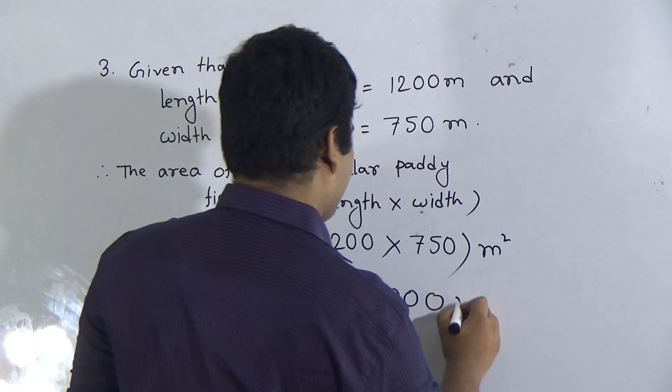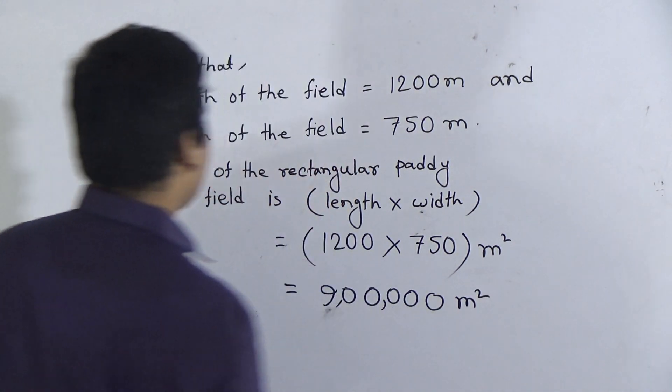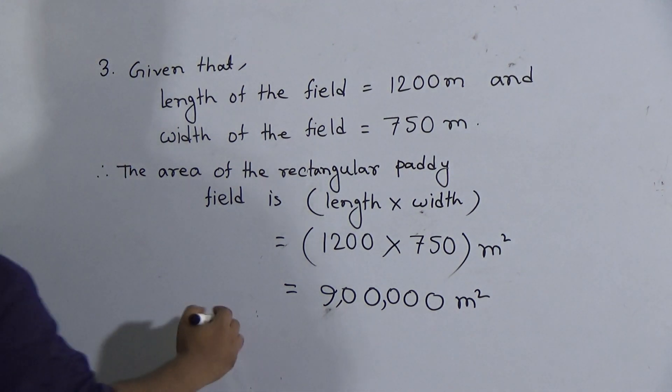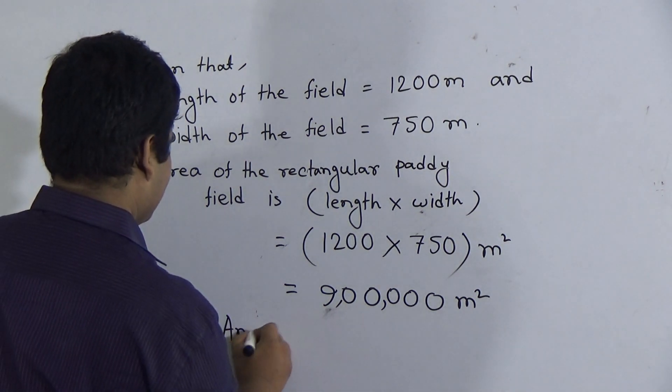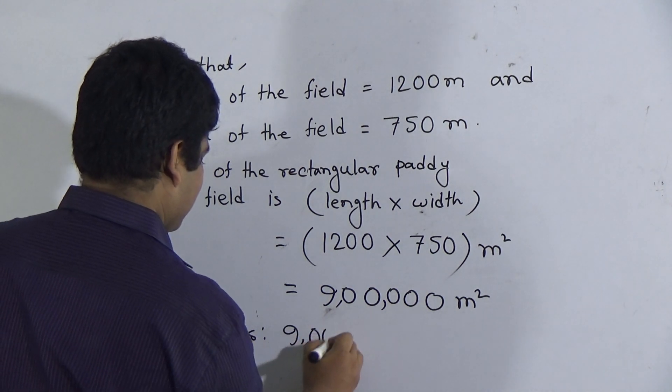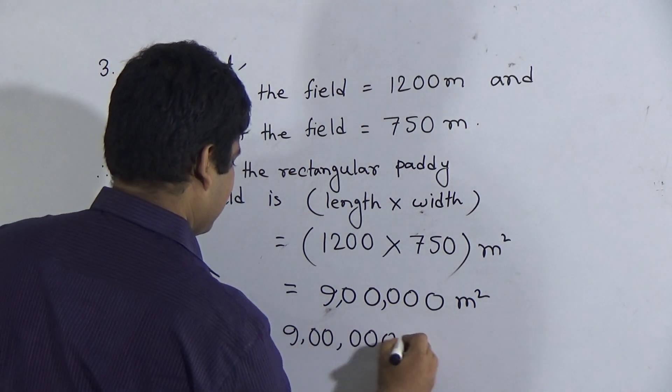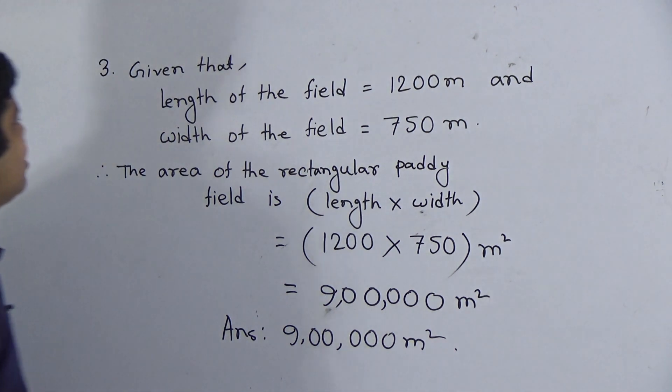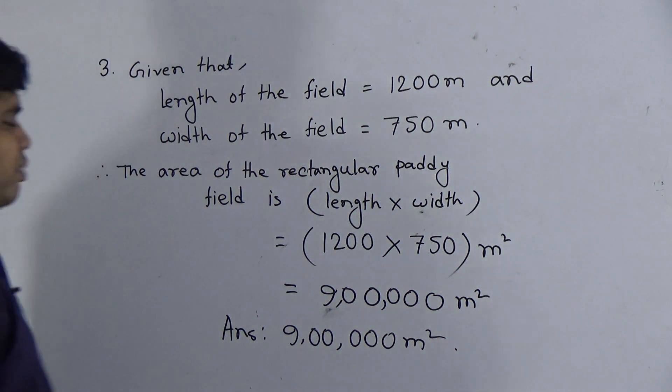So, 9 lakh meter square is the area of this rectangular paddy field. And it is the answer. You must write this.